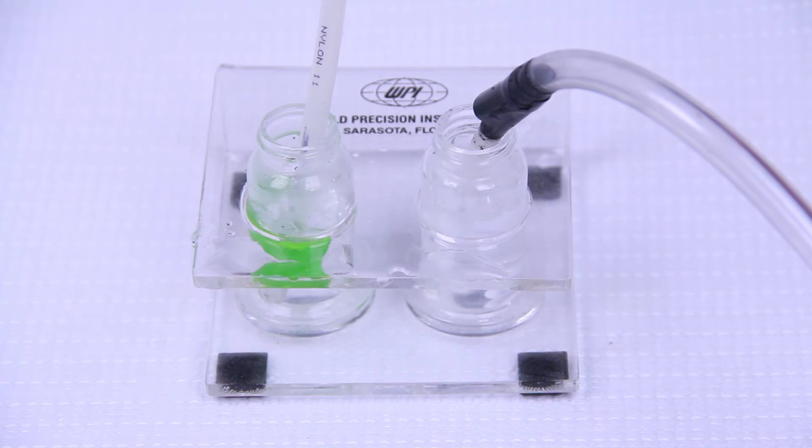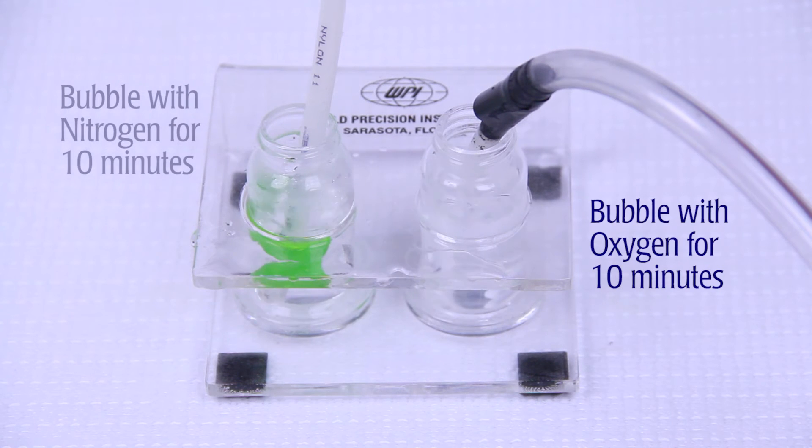Prepare a solution of 100% dissolved oxygen by bubbling with pure oxygen. To have zero percent dissolved oxygen, bubble that solution with pure nitrogen.